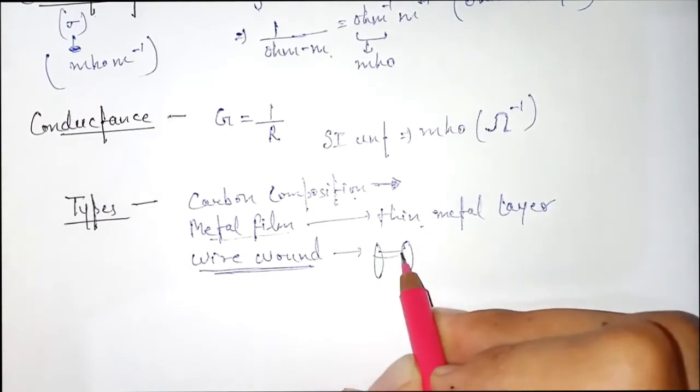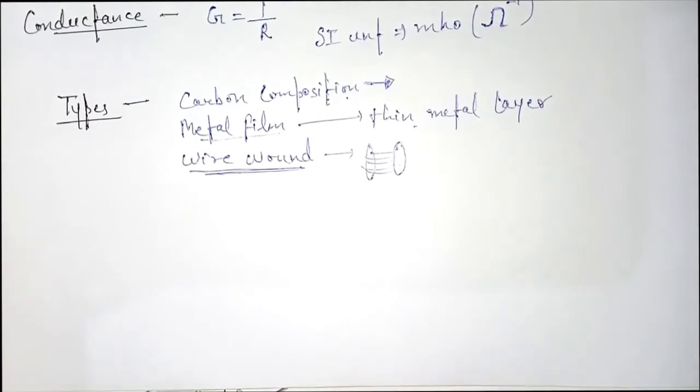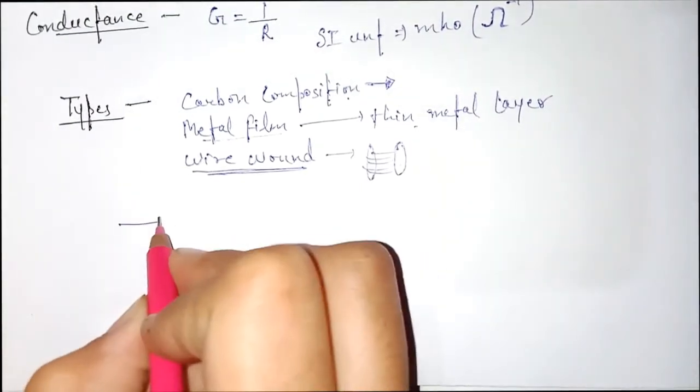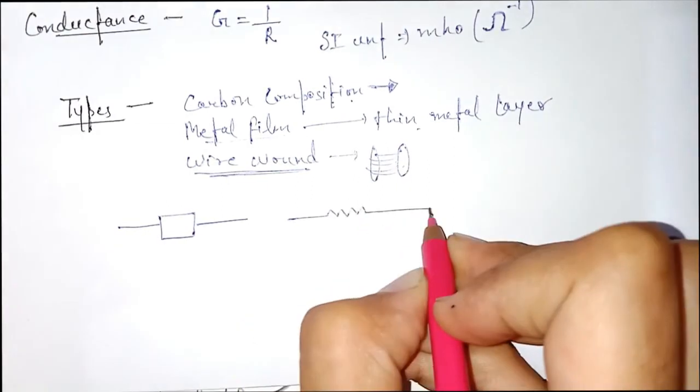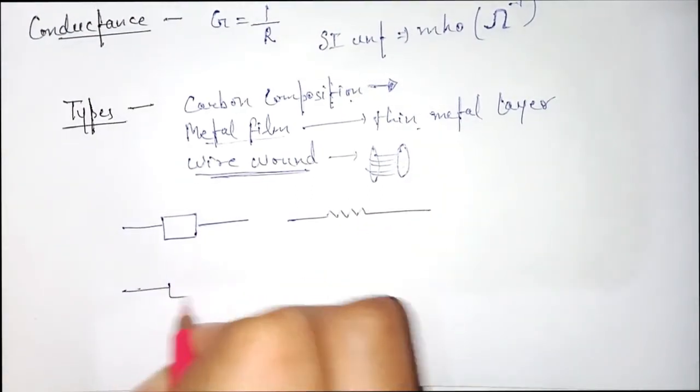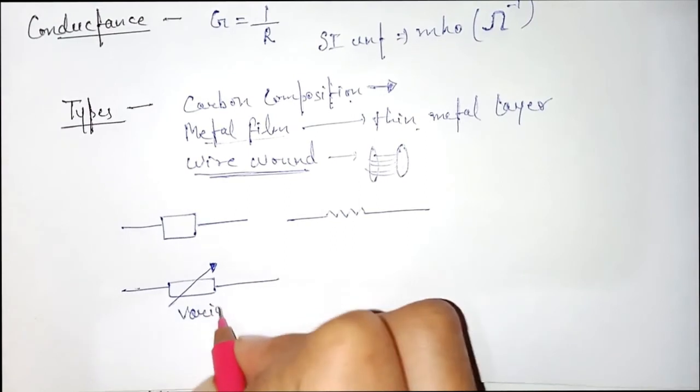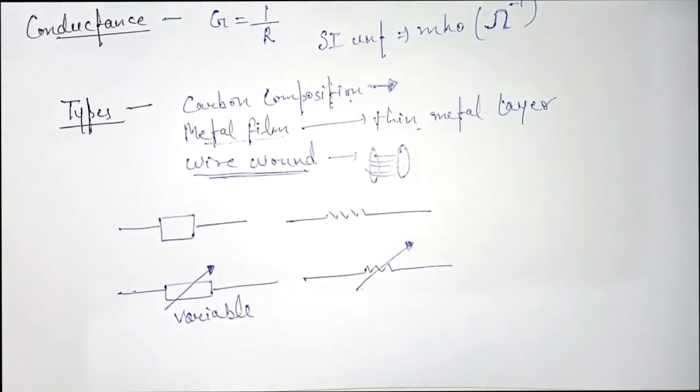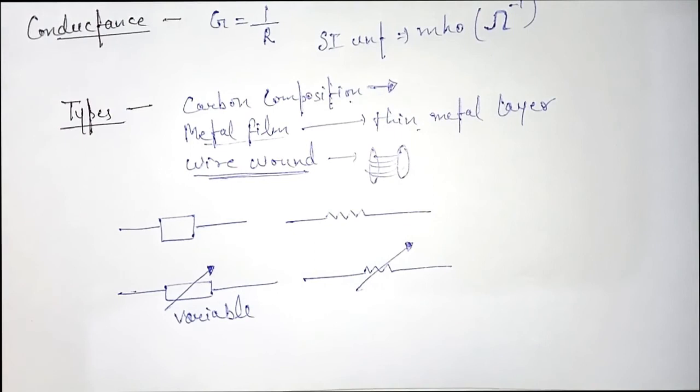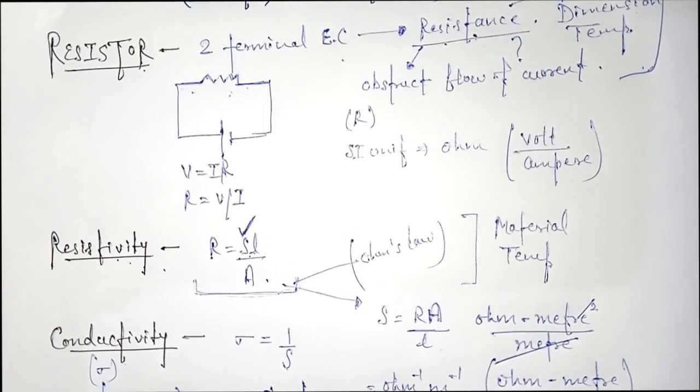In case of wire wound resistors, there are two terminals composed of wire wound which gives resistance. Now, what is the symbol of resistance? This is the first symbol you can use to represent resistors. And for variable resistors, we use this type of symbol. If you have any doubt regarding resistors, you can ask me in the comment section. Thank you.